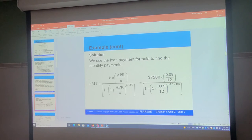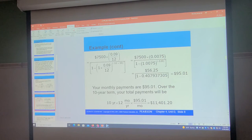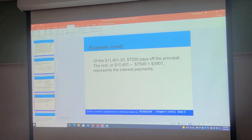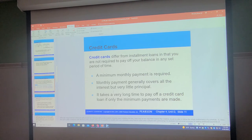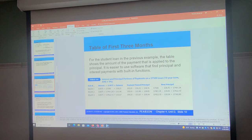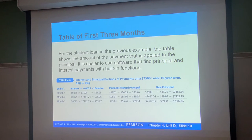There's an example in the PowerPoint within the module showing the formula method, which we got the same $95.01. Now let's look at an important slide about the amortization process. For the $7,500 loan at 9% APR over 10 years — an amortized loan — you can see how interest accumulates and how you pay it off step by step. Let's look at the first three months of this example to understand how amortization works.